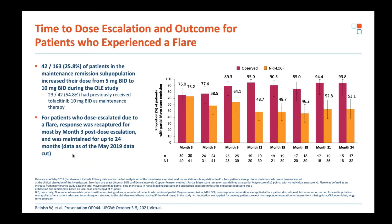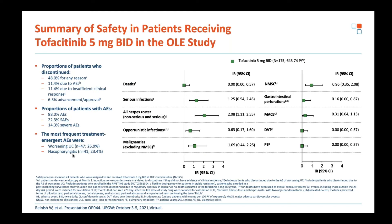For patients who flare after reducing from 10 to 5 mg BD and then re-escalate back to 10 mg BD, the majority recapture response — mostly by month two. As-observed versus non-responder imputation analyses give different curves, with the truth probably somewhere in between. The key message is that you can recapture response in many patients, and that response tends to persist over time.